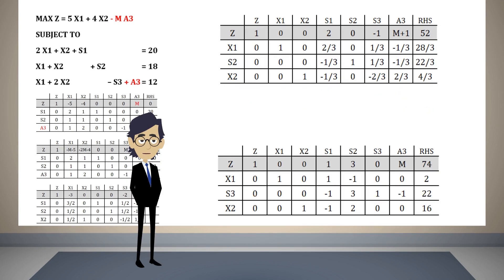With this we are done solving the problem. There are no negative numbers in the objective function row, confirming optimality. The solution is x1 equal to 2 and x2 equal to 16, and the objective function reaches a value of 74. I hope this session has been useful — see you soon.